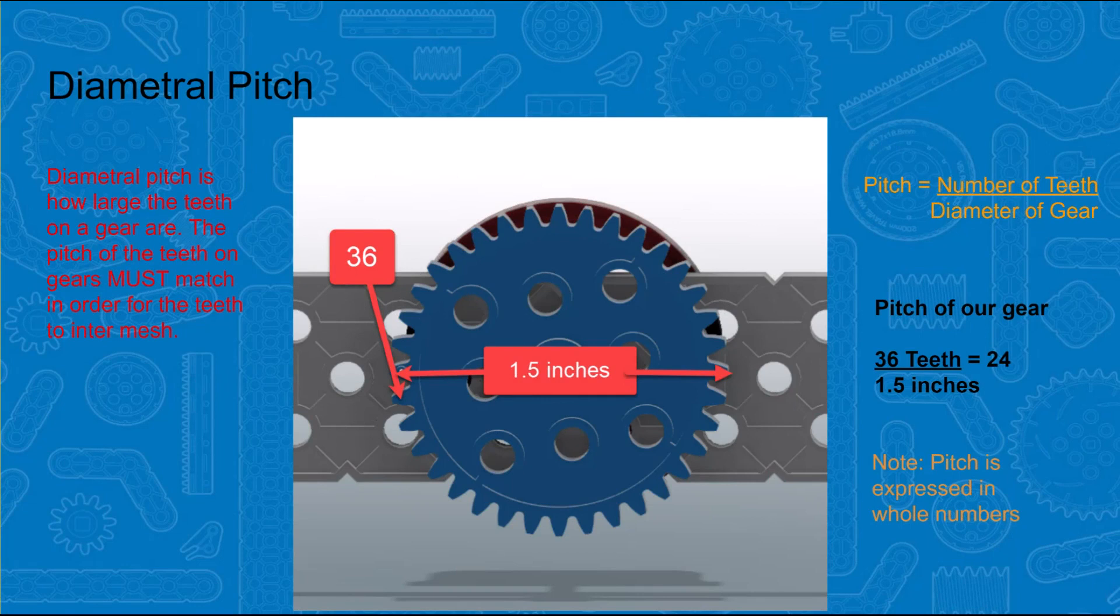Gear pitch is how large the teeth are on a gear. It is the whole number ratio of the number of teeth to the diameter of the gear. For our sample gear, this is 36 teeth divided by 1.5 inches, which gives us a pitch of 24.